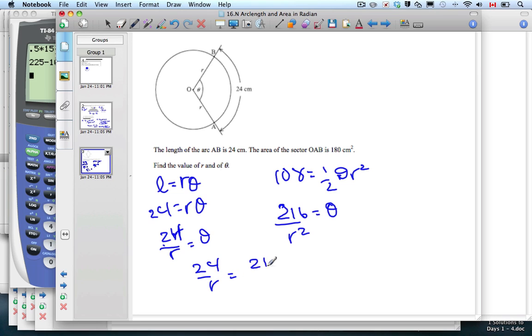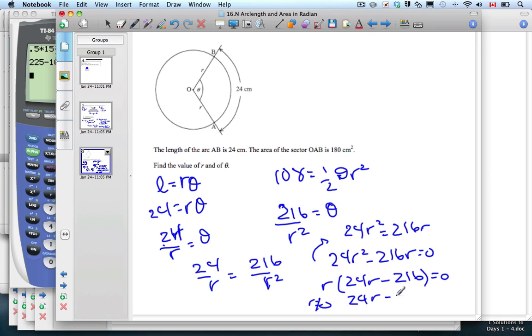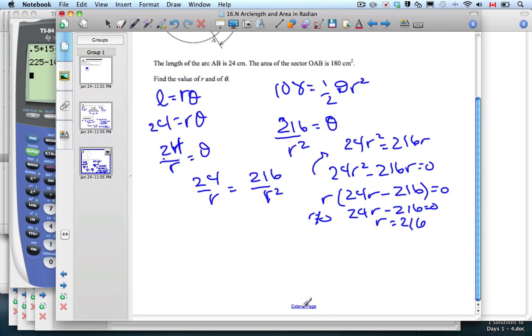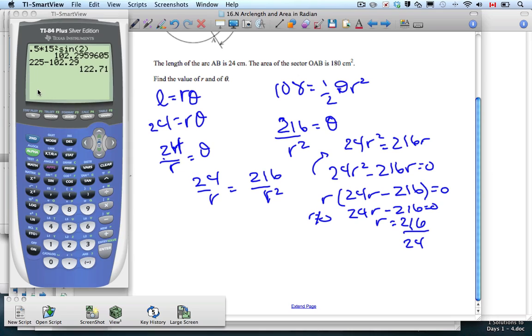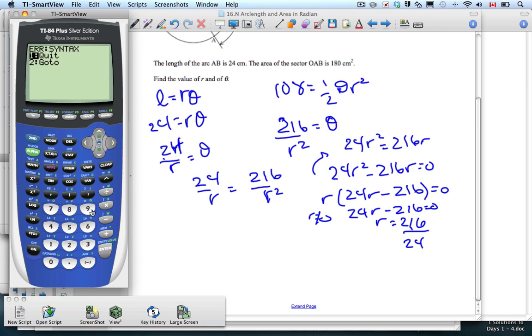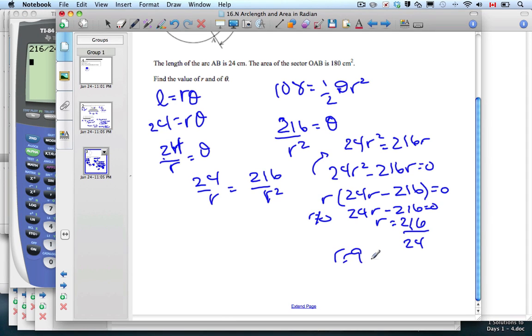Set them equal to each other. 24 over R equals 216 over R squared. Cross multiply, and so I get 24 R squared equals 216 R. Bring it all to one side: 24 R squared minus 216 R equals zero. Factor out an R. 24 R minus 216 equals zero. So R equals 216 divided by 24, which is 9. R is 9 centimeters.